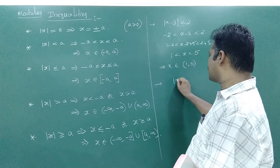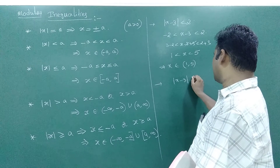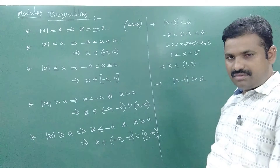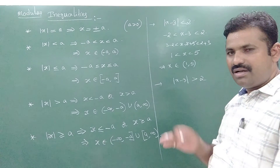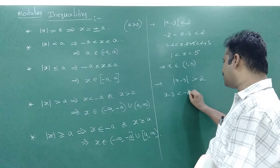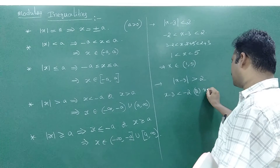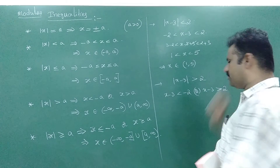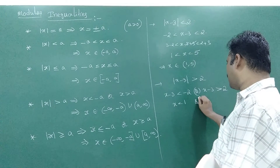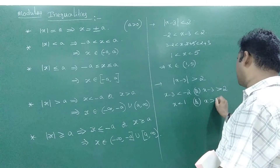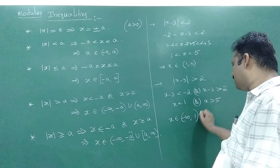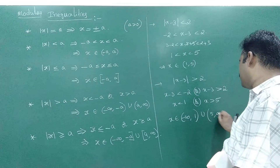Now suppose the problem is: mod of x minus 3 greater than 2. Using mod x greater than a means x less than minus a or x greater than a, we write: x minus 3 less than minus 2 or x minus 3 greater than 2. Adding 3: x less than 1 or x greater than 5. So x belongs to minus infinity to 1 union 5 to infinity.